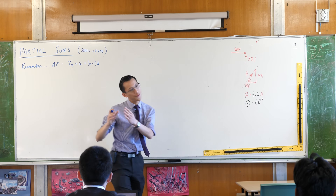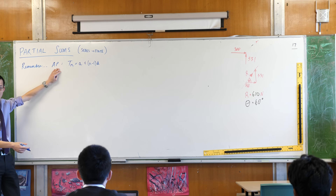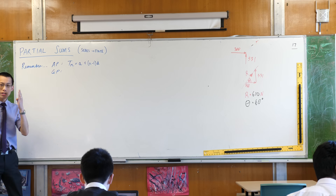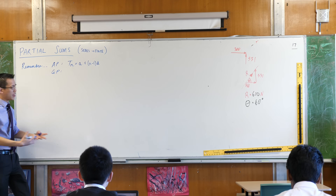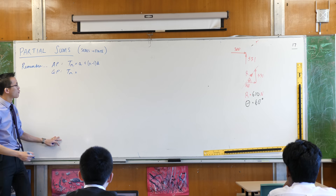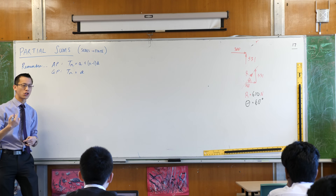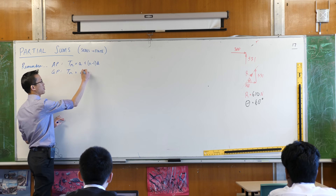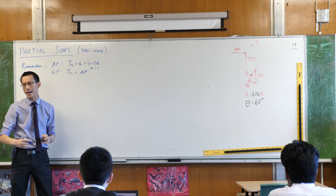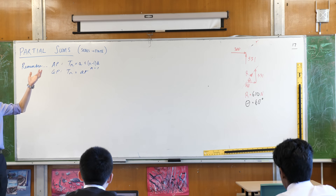We then said if you advance from term to term not by addition but by multiplication, we don't call that an AP - we call it a GP, a geometric progression. In just the same way, we came up with a formula for the nth term of a GP. You again start with the first term, but there's not a common difference - there's a common ratio R. It's the same deal: you're always lagging one behind, so that's where that n-1 comes from.